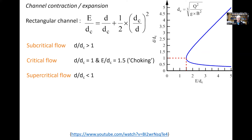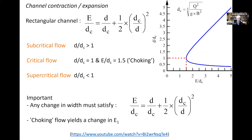Importantly, for a rectangular channel, any change in width must fulfill the Bernoulli equation: E/dc = d/dc + ½(dc/d)². And of course, when choking takes place, it could potentially yield some change in the upstream specific energy.